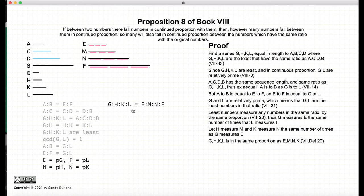So we have that g, h, k and l are the same proportions as e, m and f, according to Definition 20 of Book 7.